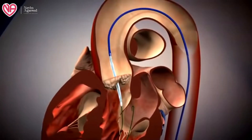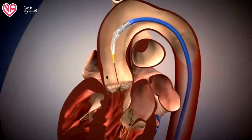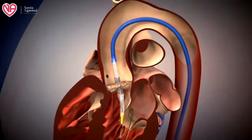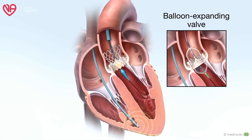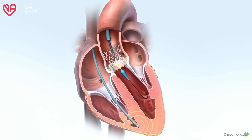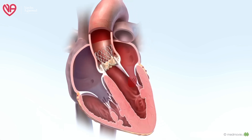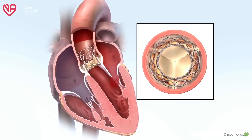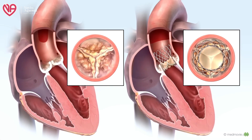The valve is basically of two types. A balloon expandable valve, in which the valve is positioned at the valve site and a balloon inside the valve is inflated at high pressure; once expanded, the tissue valve is deployed and the balloon is removed. There is also a self-expandable valve, in which a sheath is placed over the mesh and once the sheath is removed, the valve automatically expands due to internal elastic forces. Either can be used depending on the doctor's preference, and clinical results of both are not very different.